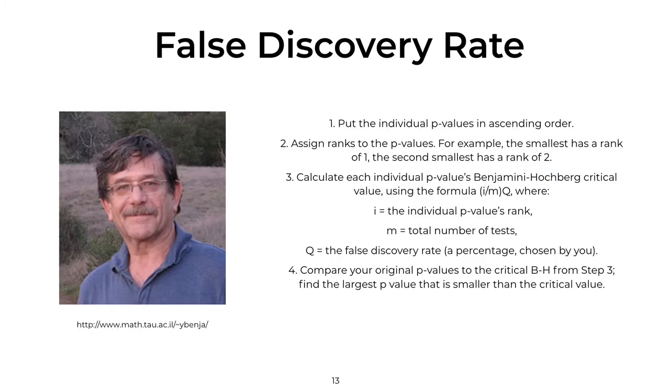The false discovery rate approach is a more recent development. This approach also determines adjusted p-values for each test. However, it controls the number of false discoveries in those tests that result in a discovery, such as a significant result. Because of this, it is less conservative than the Bonferroni approach and has greater ability to find truly significant results.